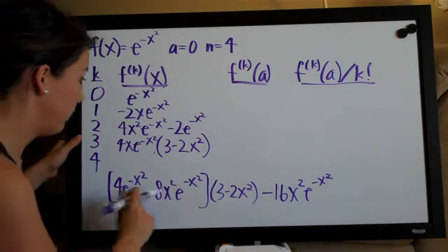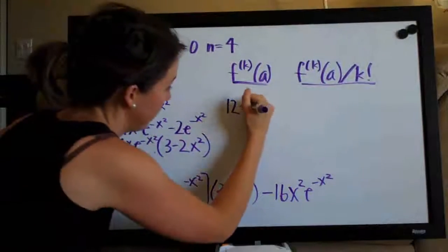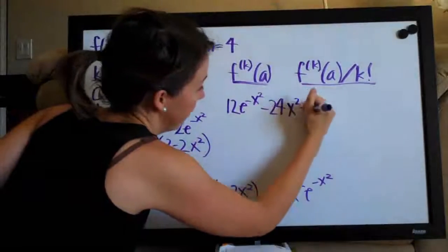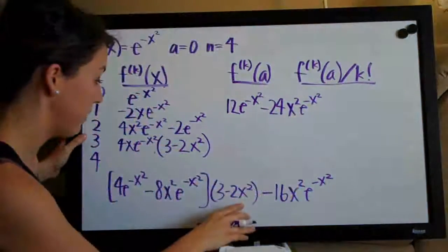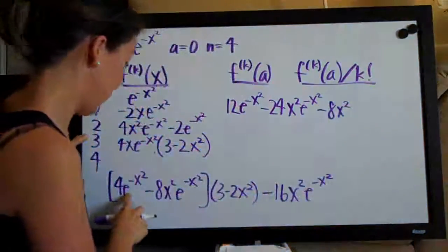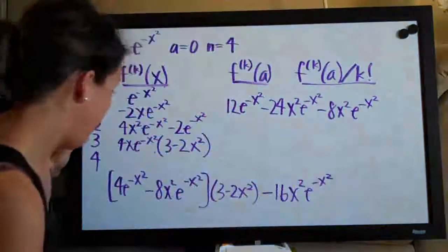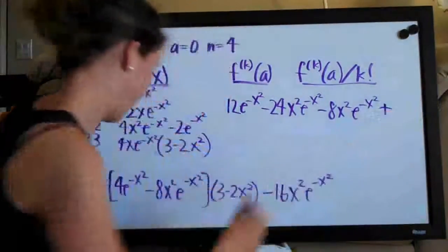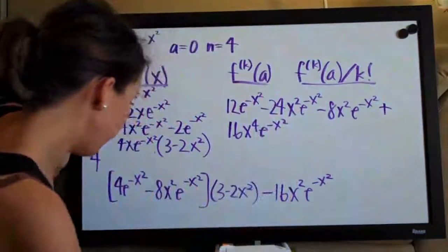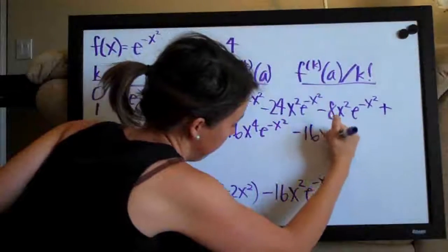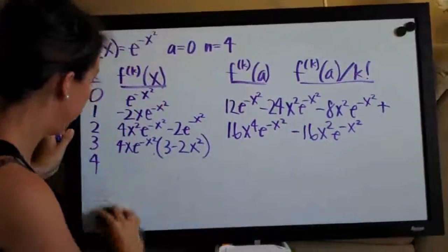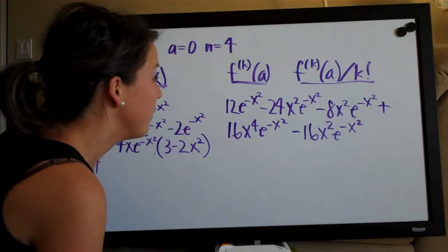Now let's see how we can simplify this further — let's distribute across. We'll have 3 times the first term, giving 12·e^(-x²), then minus 24x²·e^(-x²). Then looking at the 2x² term, we'll have minus 8x²·e^(-x²), and since we have a minus and a minus, plus 16x⁴·e^(-x²). And at the very end, minus 16x²·e^(-x²). Hopefully I'm not making any small mistakes along the way.